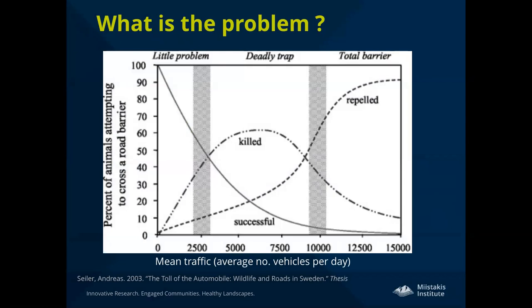It's not necessarily the roads themselves that are the problem for wildlife — it's the cars on the roads that come into direct contact with wildlife. This graph shows on the x-axis the mean traffic volume (average number of vehicles per day). As vehicles on roads increase, you see a decreasing percent of animals attempting to cross. At around 10,000 vehicles per day, you see increasing repulsion from roads, resulting in a barrier effect where wildlife just don't try to cross, which has all kinds of potential population-level impacts.